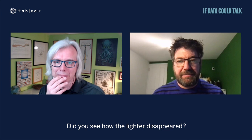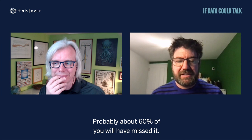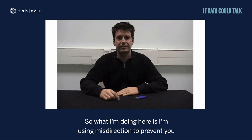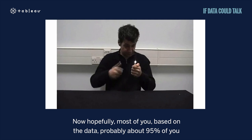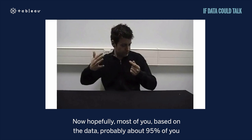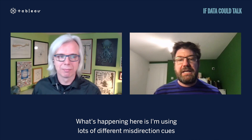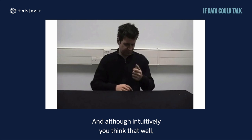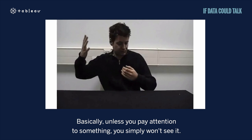We're playing it again — it's exactly the same clip. What I'm doing here is using misdirection to prevent you from seeing the lighter being dropped. About 95 percent of you will now see the lighter is simply being dropped into my lap. I'm using lots of different misdirection cues to guide your attention away from where the lighter is being dropped. Basically, unless you pay attention to something, you simply won't see it.